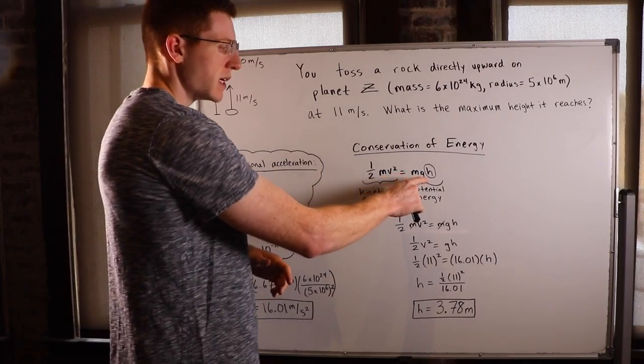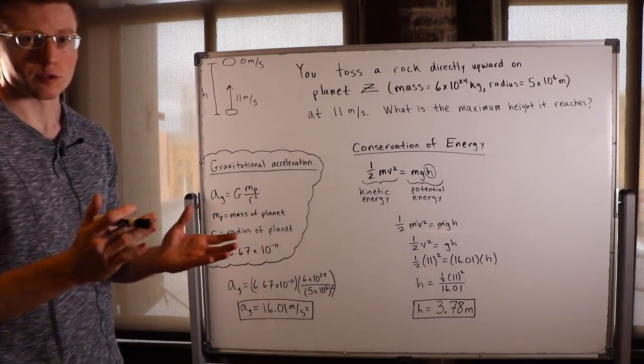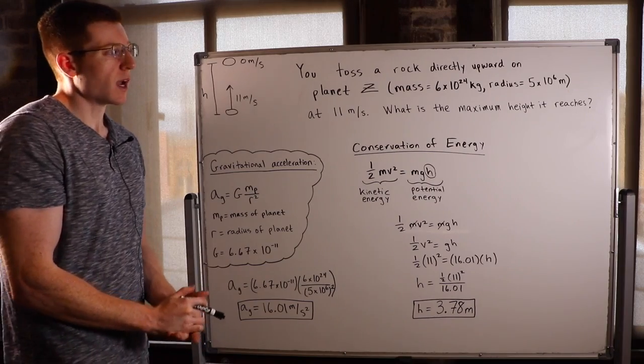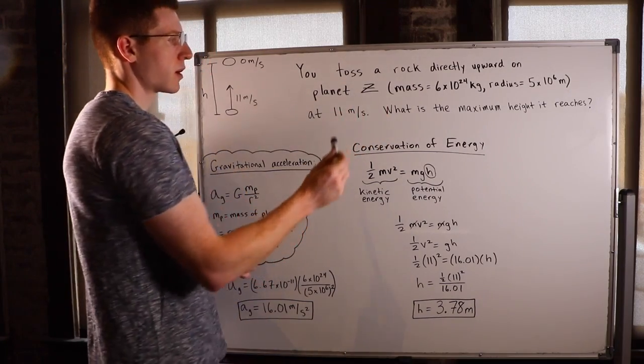The only problem is this g here. So we're not on Earth, right? So we can't use 9.8 meters per second squared for g. We actually have to solve for g because we're on a different planet.